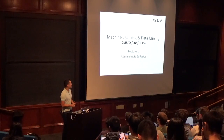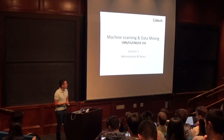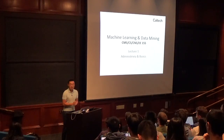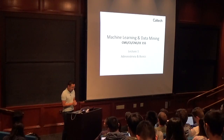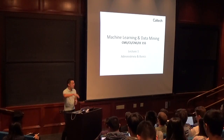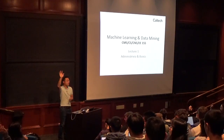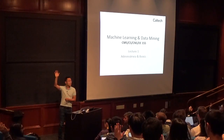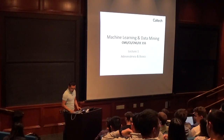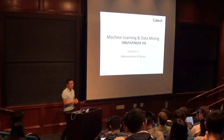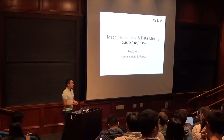Welcome to CS155, cross-listed with CMS, CNS, and EEE. This is Machine Learning and Data Mining. About 50-50 undergrads and graduate students — great. Today we'll be talking about some basics of machine learning, but first we'll talk a little bit about administrivia.